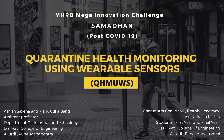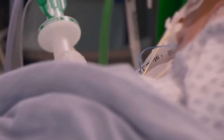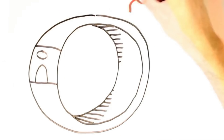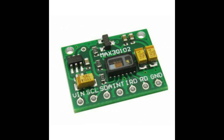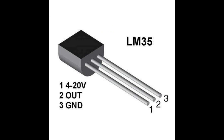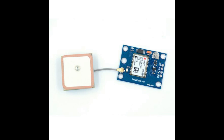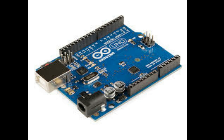As a solution to this problem, we are proposing the system Quarantine Health Monitoring Using Wearable Sensors, QHMUWS. Here, patients or quarantine people can be monitored using a wearable device equipped with sensors like MAX30102 for SpO2 and heart rate, LM35 for body temperature, sphygmomanometer for blood pressure, and NEO-6M GPS for location. All these sensors are integrated with an Arduino Uno chip.